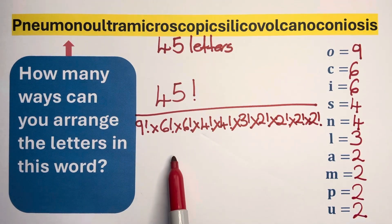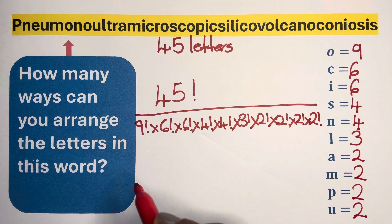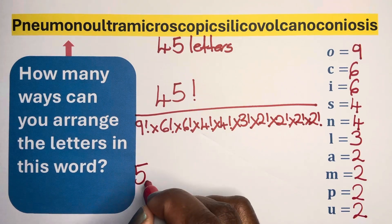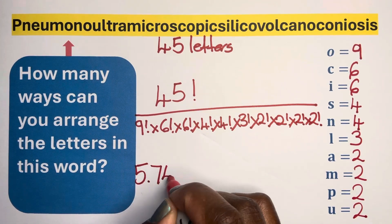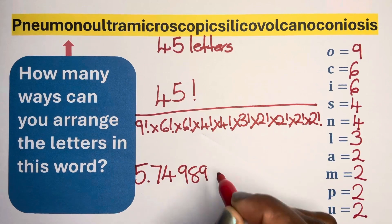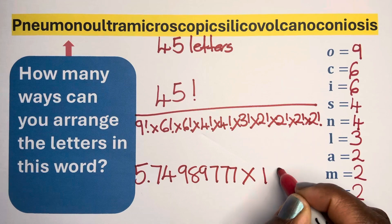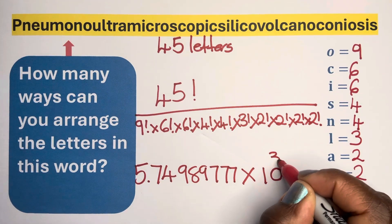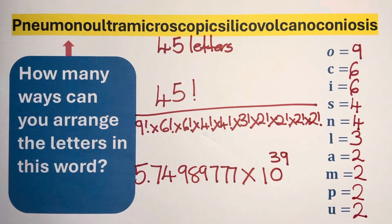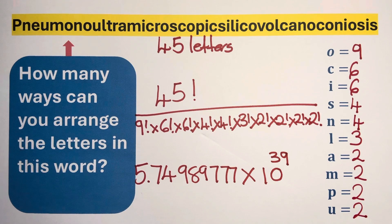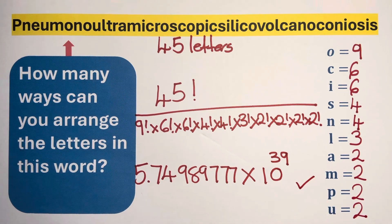If you plug this in the calculator, you should get 5.74989777 times 10 to the power of 39 combinations you can arrange the letters in. That's it.